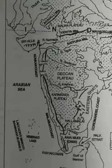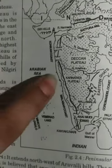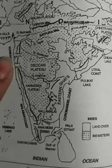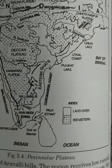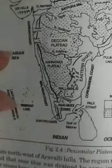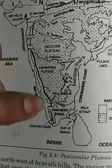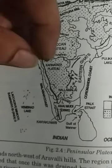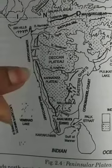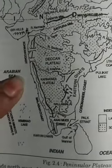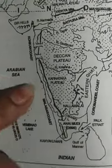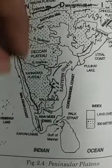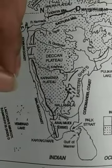The western coastal plain is located between the Western Ghats and the Arabian Sea coast. It is a narrow plain with an average width of 64 kilometers. Looking at the map, you can see the distance — this width shows that it is a very narrow plain.